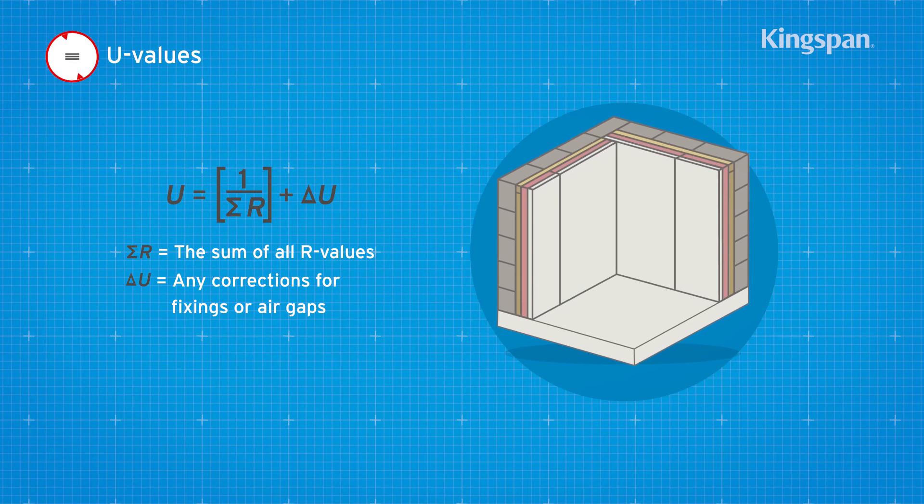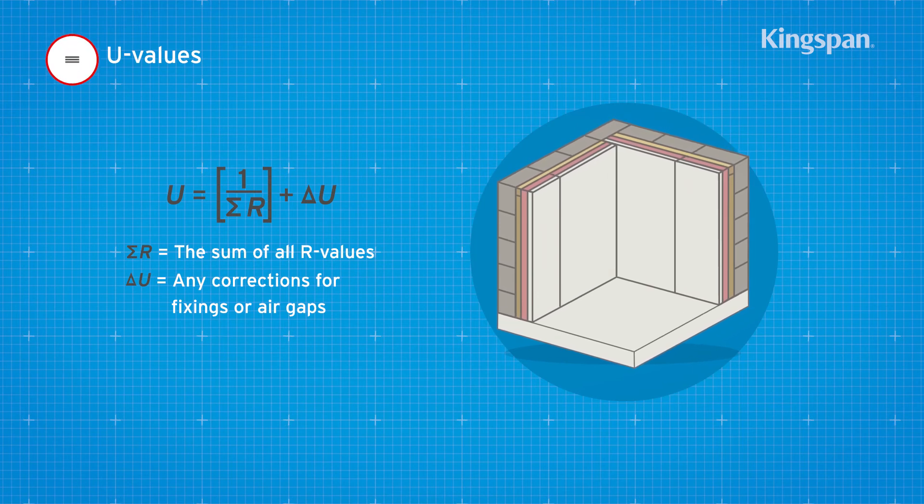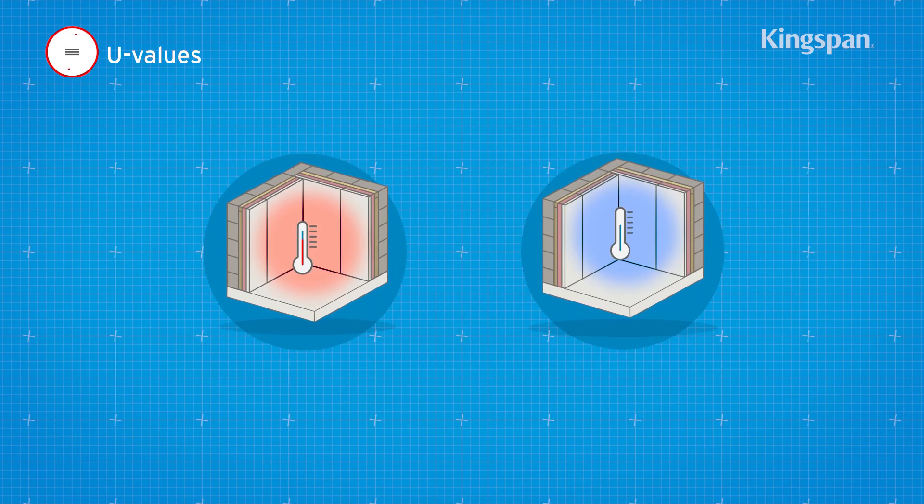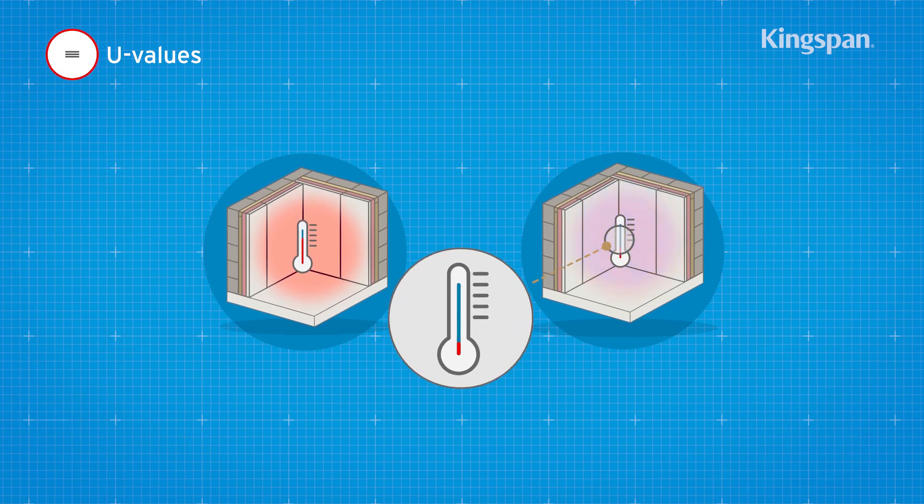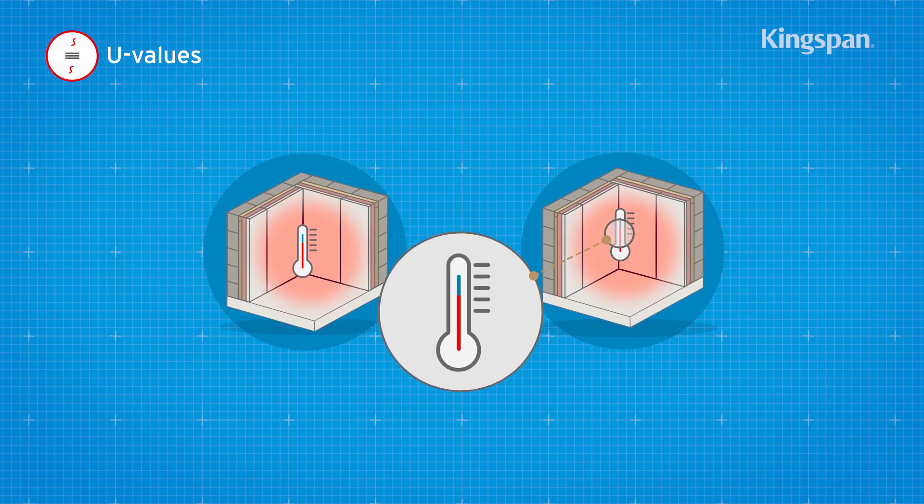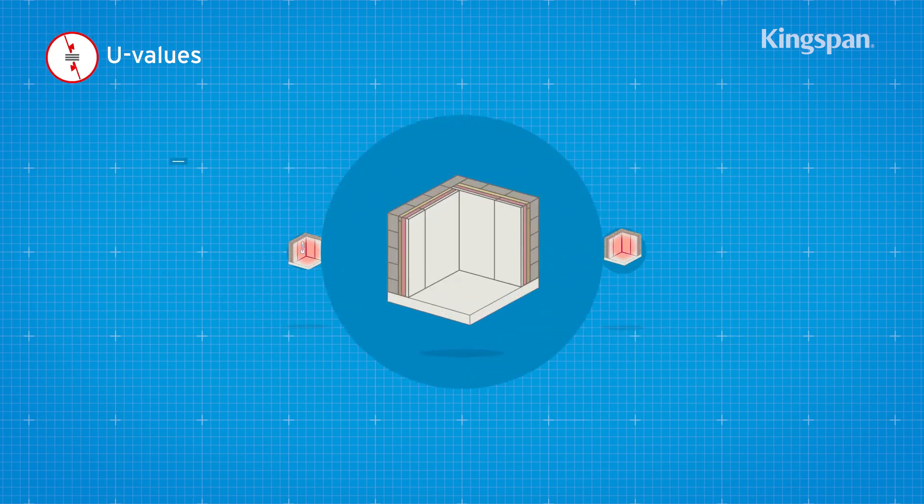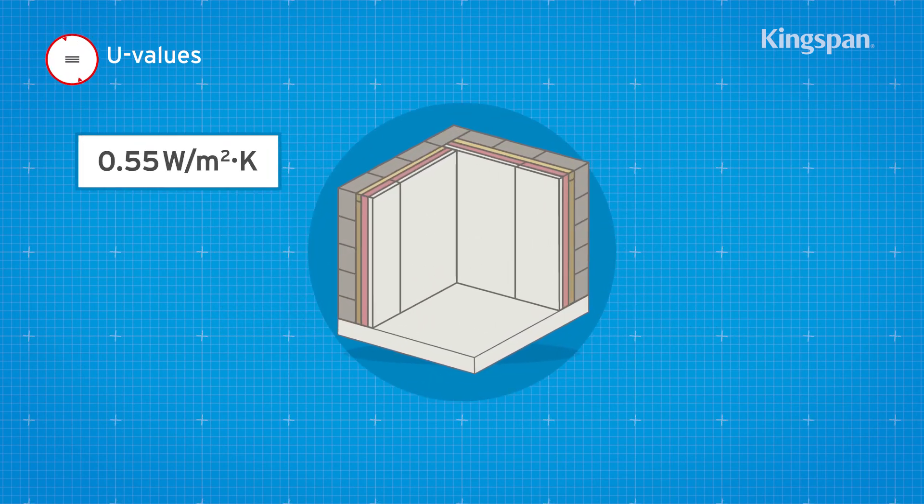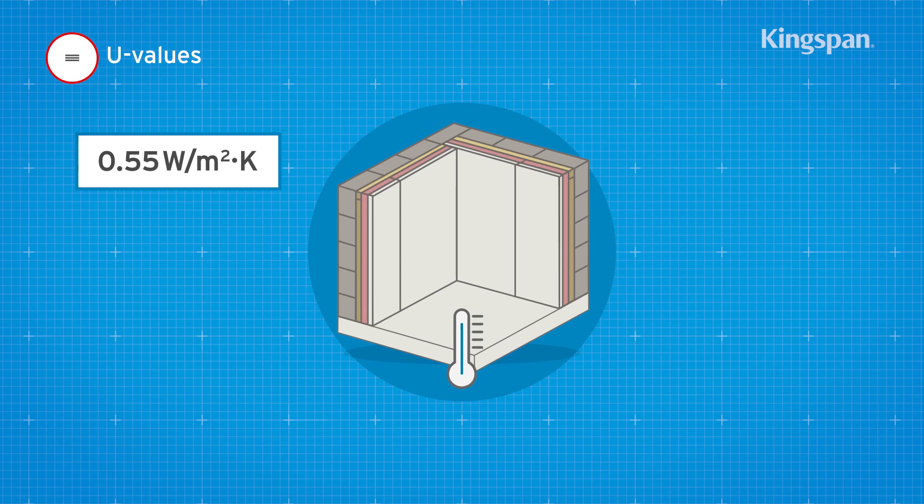In units of watts per meter squared Kelvin, the U value shows the ability of an element to transmit heat from a warm space to a cold space in a building and vice versa. It's also the figure you need to work to when meeting building regulations or standards.